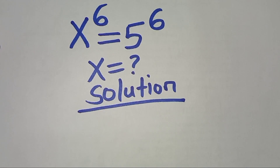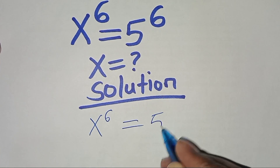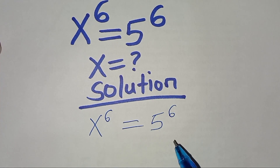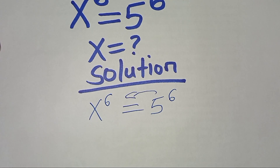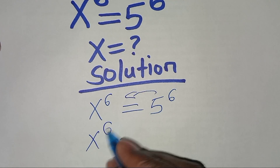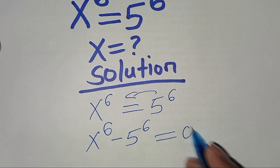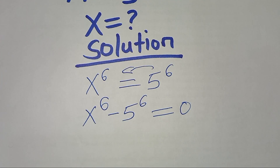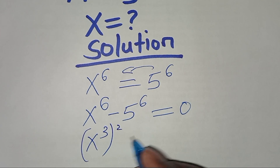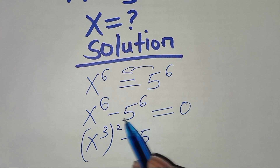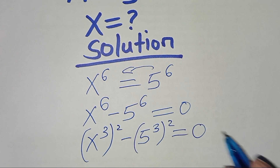Now for the solution, we have x to power 6 equals 5 to power 6. Taking everything to one side, we get x to power 6 minus 5 to power 6 equals 0. We can express this as x to power 3 squared minus 5 to power 3 squared, which equals 0.